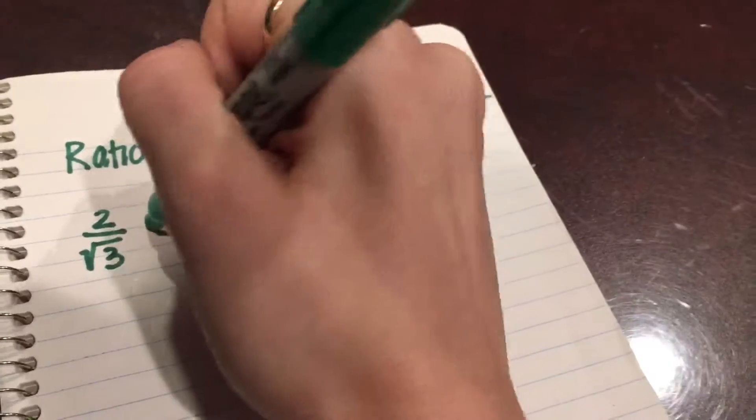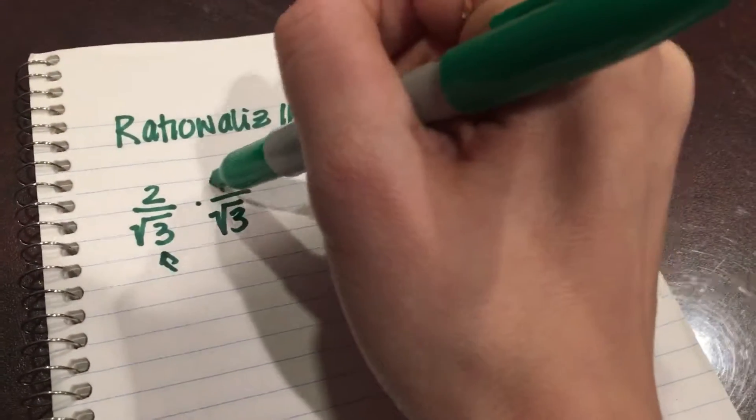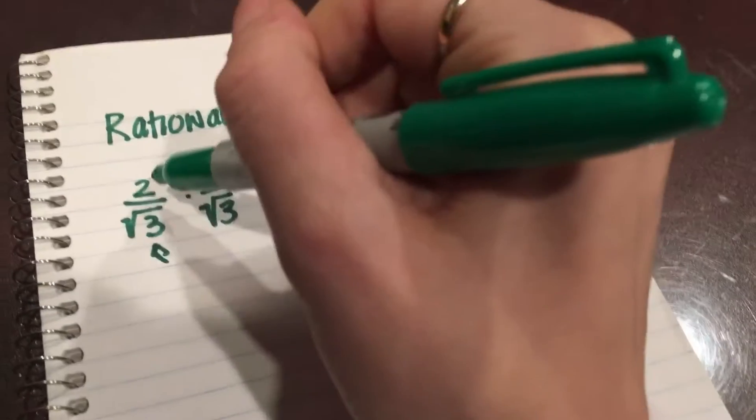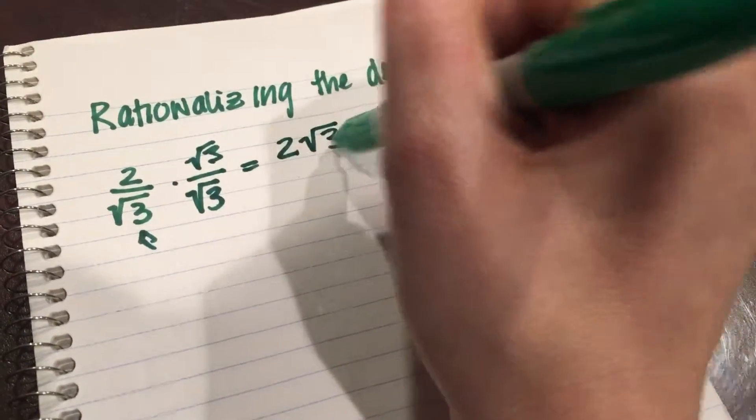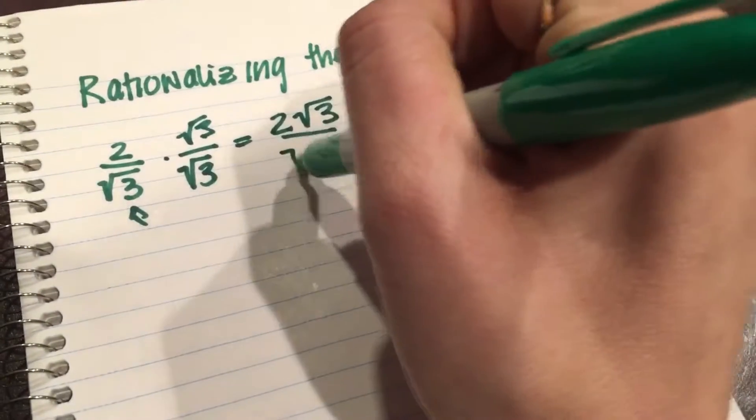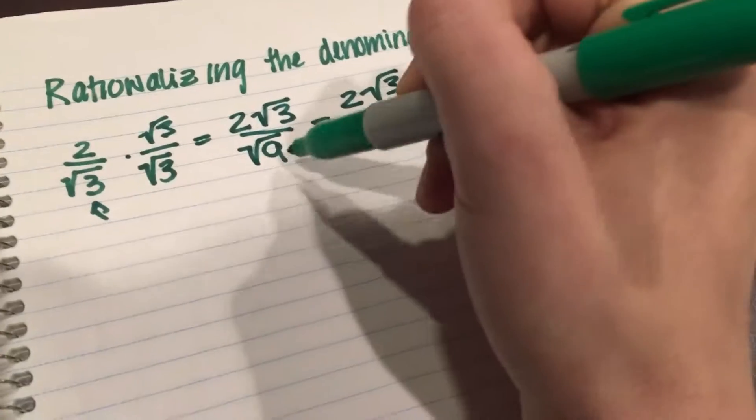So here we have radical 3, so we're gonna multiply top and bottom by radical 3. 2 times radical 3 is just 2 radical 3, and radical 3 times radical 3 is radical 9, which is 3. So we get 2 square root of 3 over 3.